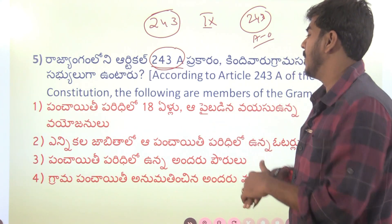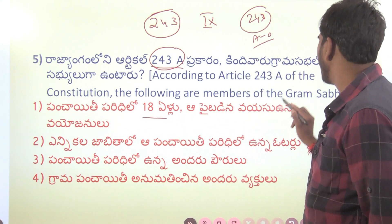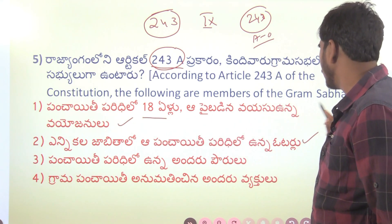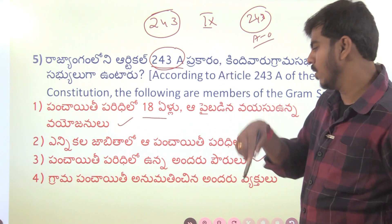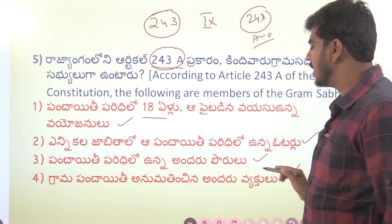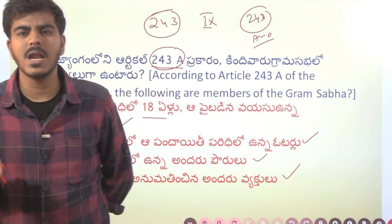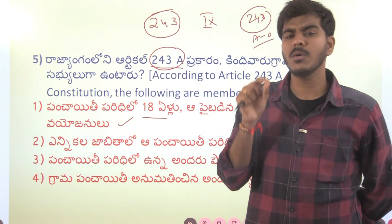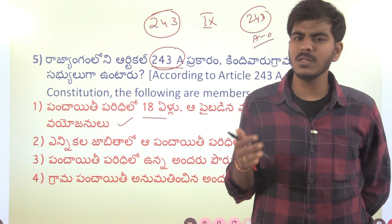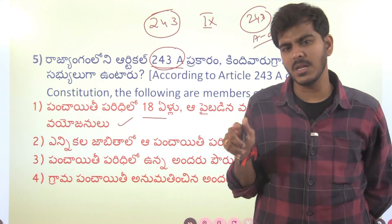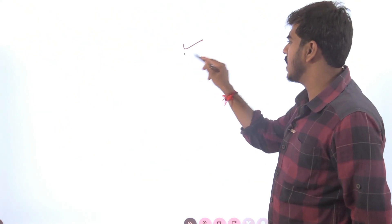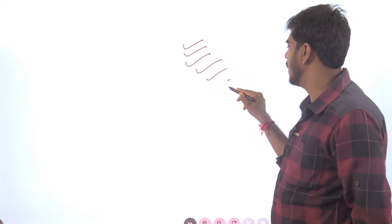This is very important. We are talking about panchayati raj. If you want to participate in panchayati raj bodies, you need to be 18 years of age. As a ward member, sarpanch, councillor, ZPTC, and MPC, you need to be 21 years old to contest in local bodies.